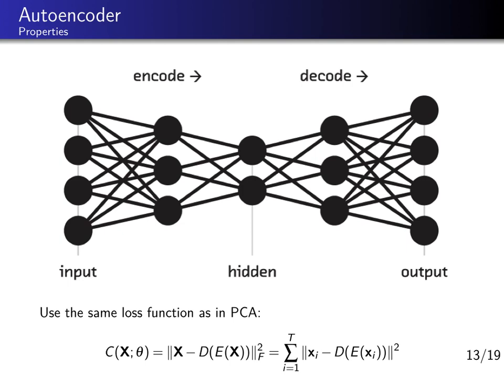We can also write this as a sum over individual data points i from 1 to T, minimizing the reconstruction error for every single data point — specifically, the Euclidean norm of the original data point minus D of E of the original data point. PCA also minimizes such a reconstruction error, and now the autoencoder uses a neural network structure to minimize the same reconstruction error.